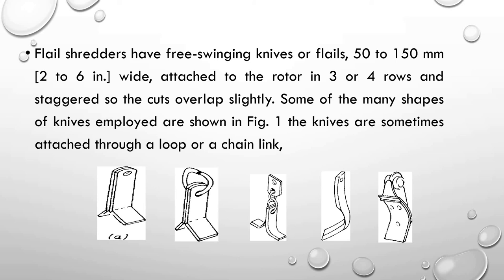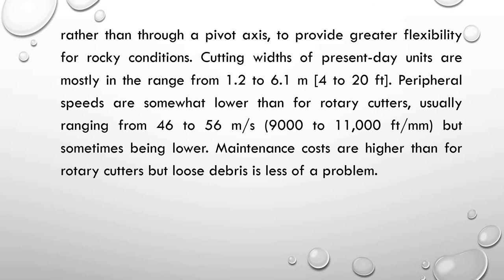Flail shredders have swinging knives, 50 to 150 mm wide, attached to the rotor in three to four rows, and staggered so that cuts overlap slightly. Some of the many shapes of knives are shown in the following figures. These knives are sometimes attached through a loop or chain link rather than through a pivot axle to provide greater flexibility for rocky conditions. The cutting width of present-day units is mostly in the range of 1.2 to 6.1 meters. Peripheral speeds are somewhat lower than for the rotary cutter, usually ranging from 46 to 56 meters per second, but sometimes lower. Maintenance costs are higher than for the rotary cutter, but loose debris is less of a problem.